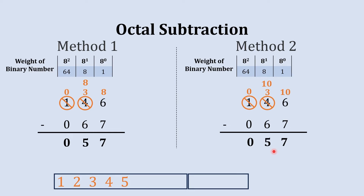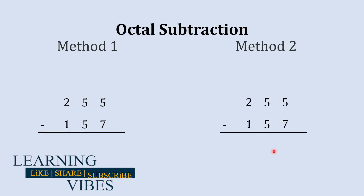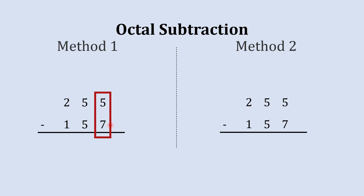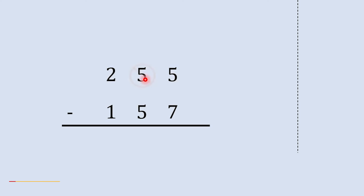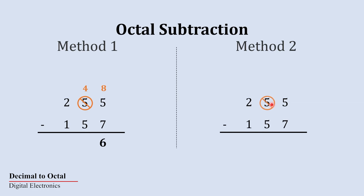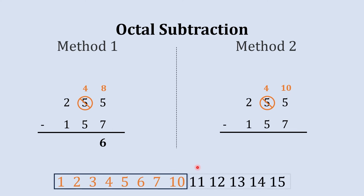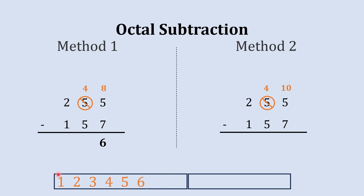This was a little simple. Now let's do a more complex octal subtraction. We have two new numbers and the same two methods. We start with the rightmost column and subtract 7 from 5 — not possible. So 5 asks for a borrow from the next column. In method 1, when that 5 gives a borrow it's 8 here and 4 left. So 8 plus 5 is 13, and 13 minus 7 gives us 6. In method 2, the borrow gives 10 here and 4 remains, so 10 plus 5 is 15 in octal, and 15 minus 7 gives 6.